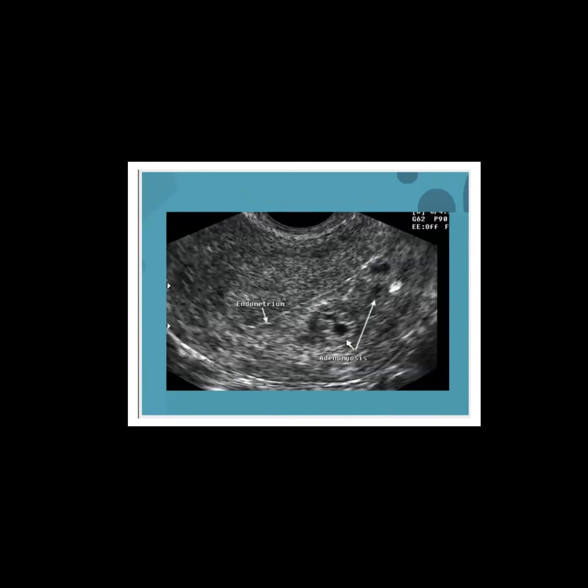In the myometrium, there are three distinct zones. The inner zone is hypoechoic. The middle zone and outer zone can be differentiated. There may be a hollow or cystic formation within the myometrium.